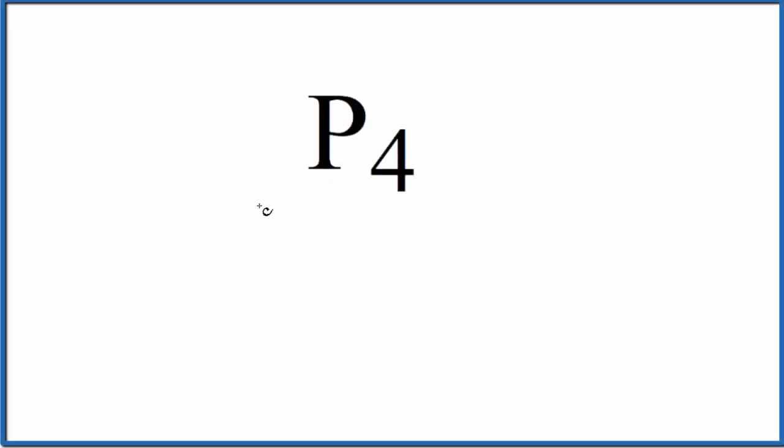In this video we'll write the name for P4. So we have four phosphorus atoms here. This is an allotrope of phosphorus, that means it's an arrangement of phosphorus atoms. There's P4, P2, several different allotropes. This one's fairly common.